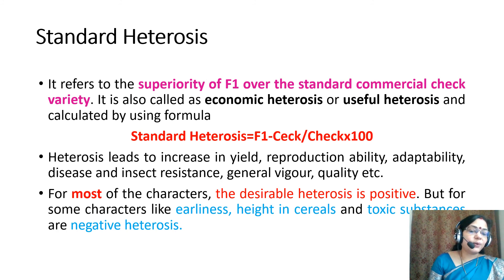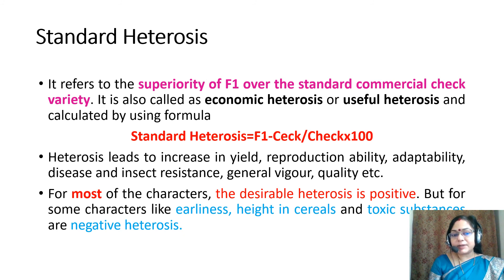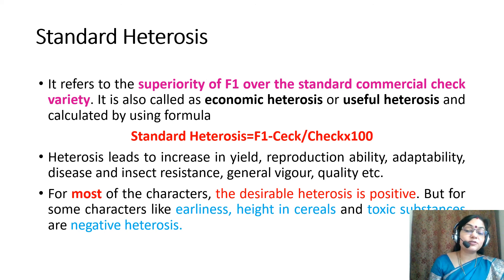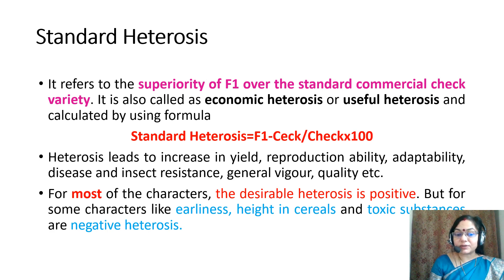Heterosis leads to increase in yield, reproduction ability, adaptability, disease and insect resistance, general vigor, quality, and more. For most characters, the desirable heterosis is positive. But for some characters like earliness, height of cereal, and toxic substance content, it is negative heterosis.